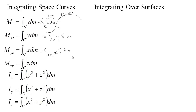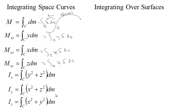Similarly, we integrate x times density dS to find the moment about the yz plane, and z times density dS for the moment about the xy plane. We also have second moments. In three dimensions, the moment of inertia about the x-axis uses the distance from the x-axis squared. The distance from the x-axis is the square root of y squared plus z squared, so squaring it removes the square root. These are the particular moments we could use for calculations.